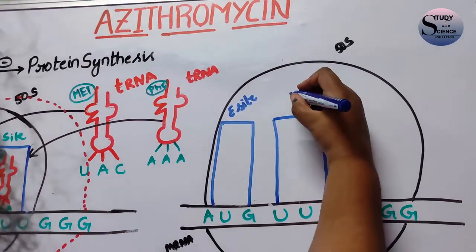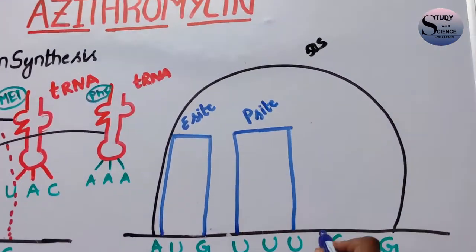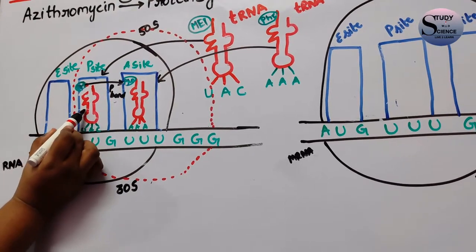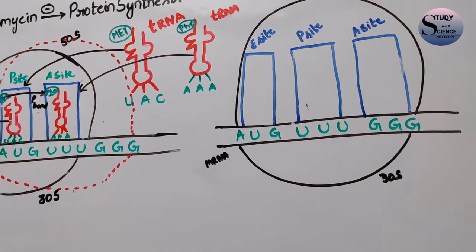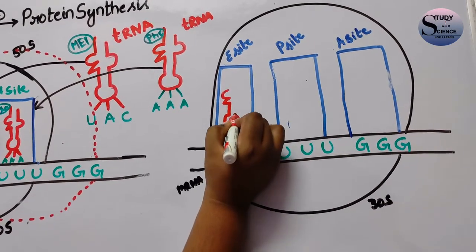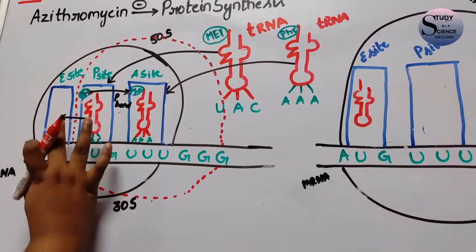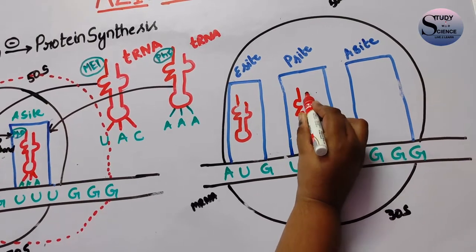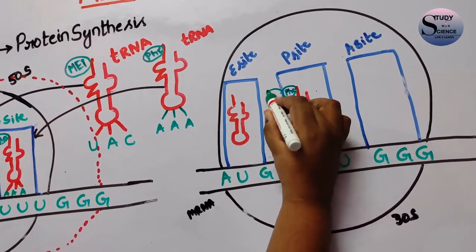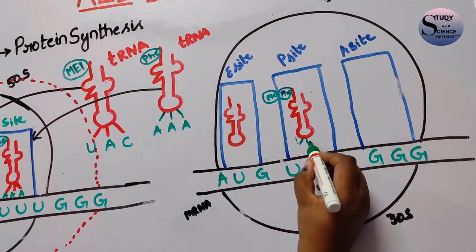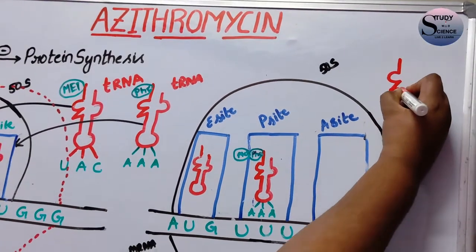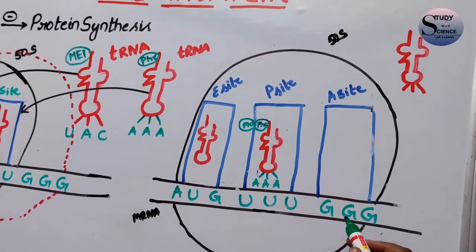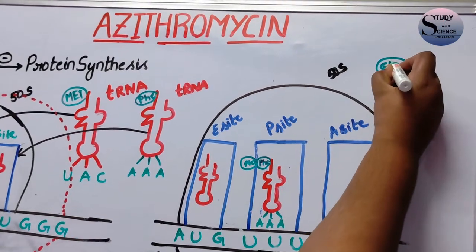A new A site is added. The old tRNA moves to the exit site and gets exited. The amino acids get bonded to each other, and the tRNA that was previously in the A site enters the P site along with the two amino acids that are bonded to each other. There is another new tRNA that contains new anticodons — for example, GGG is coded by anticodons CCC — along with the specific amino acid.